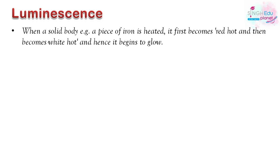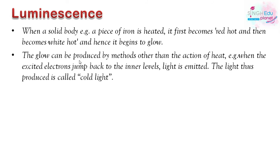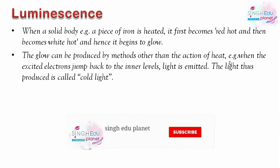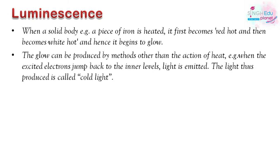So what is luminescence? If we have a solid body, like an iron piece, if we heat it, then it will be red hot and then white hot, and it begins to glow. Now this glow can be produced by heating and other methods. For example, when excited electrons jump to an inner level, light is emitted. We can use some other methods instead of heating. When electrons jump to higher and lower levels, and the light is produced, that is called cold light.